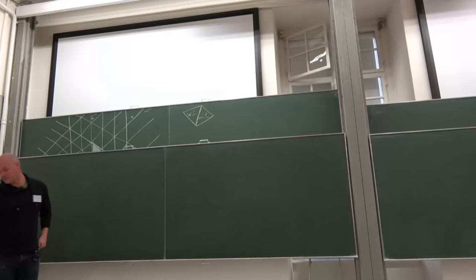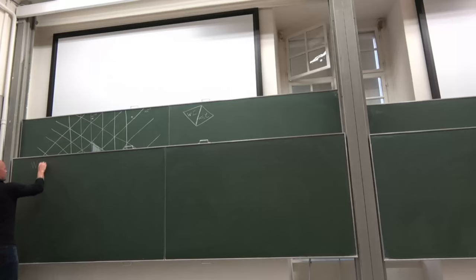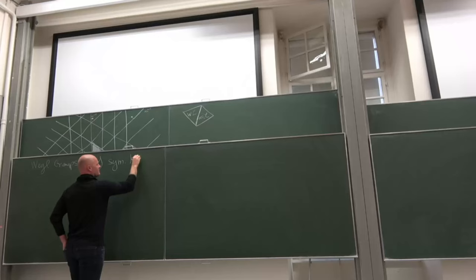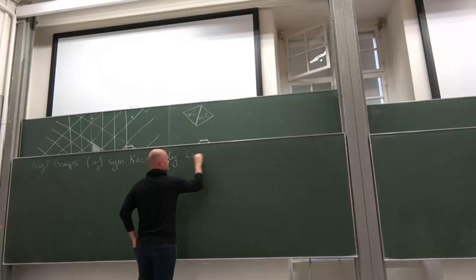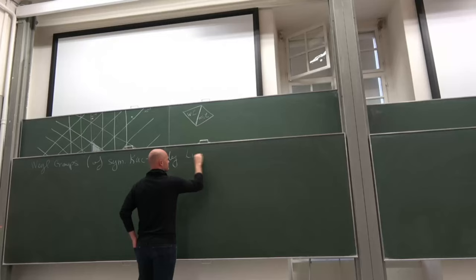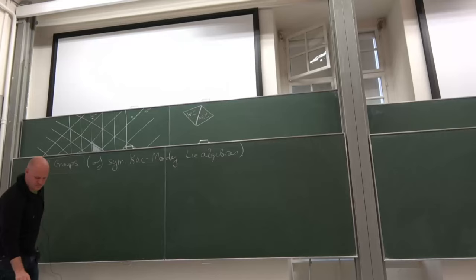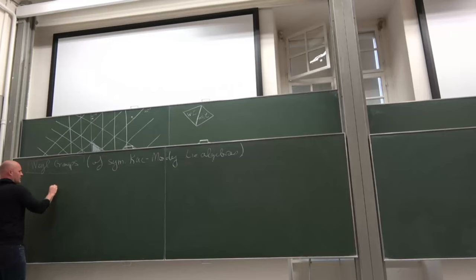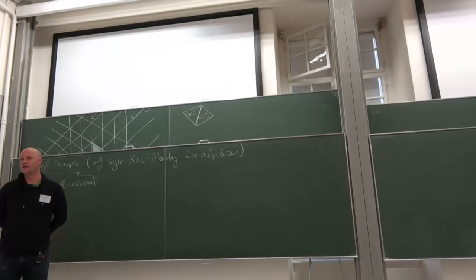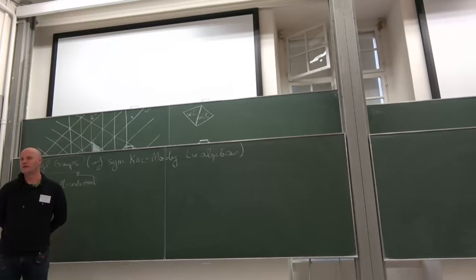The groups I'm going to talk about this week — today basically — are Weyl groups of symmetric Kac-Moody algebras. I will define this in a second. This is one class of groups we'll talk about today. The motivation is that these guys are fairly well understood. There's a rich theory of algebraic combinatorics associated to these groups, there's well-known geometry, and many basic group-theoretic questions one might ask about these groups have answers — and pretty answers.